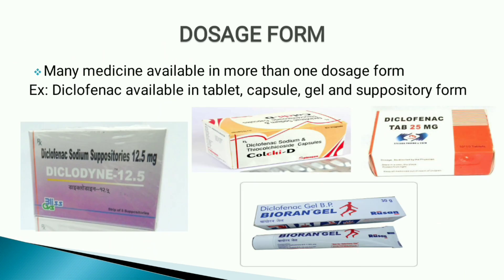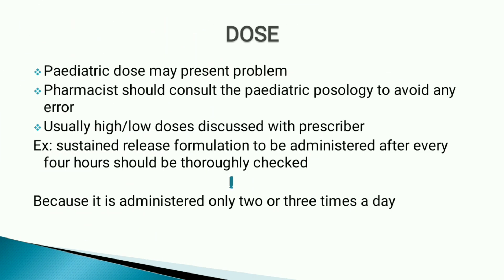Next is the dosage form. Many medicines are available in more than one dosage form: liquid, tablet, capsule, and suppository. In order to avoid ambiguity, the dosage form of the preparation should be mentioned in the prescription. For example, diclofenac is available in tablet, capsule, ointment, and suppository form. Any dosage form dispensed should match what the prescriber has specified.